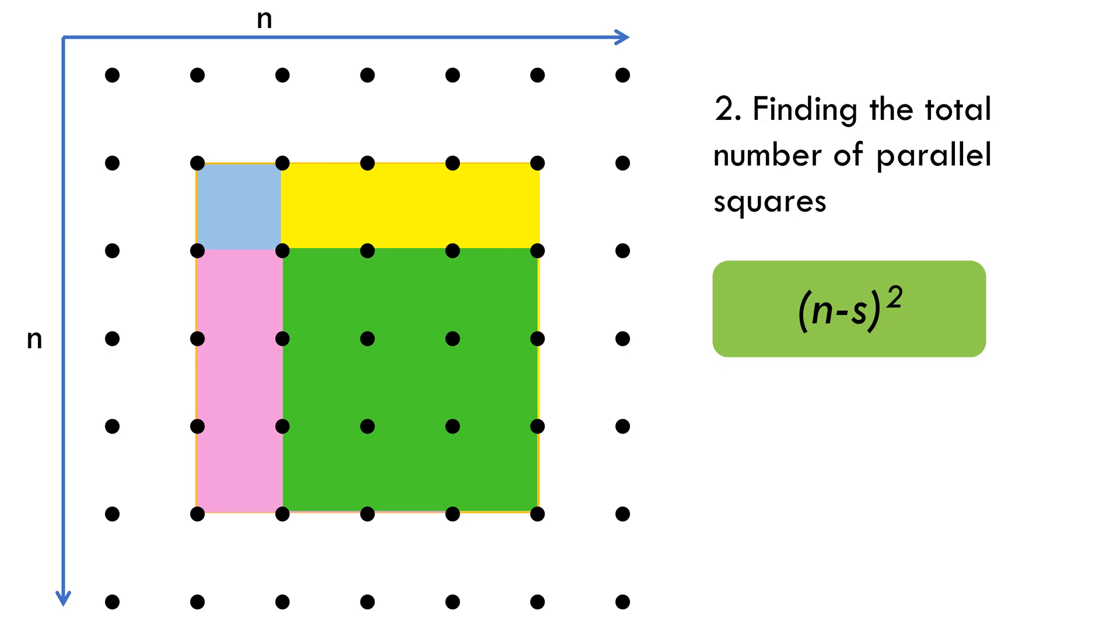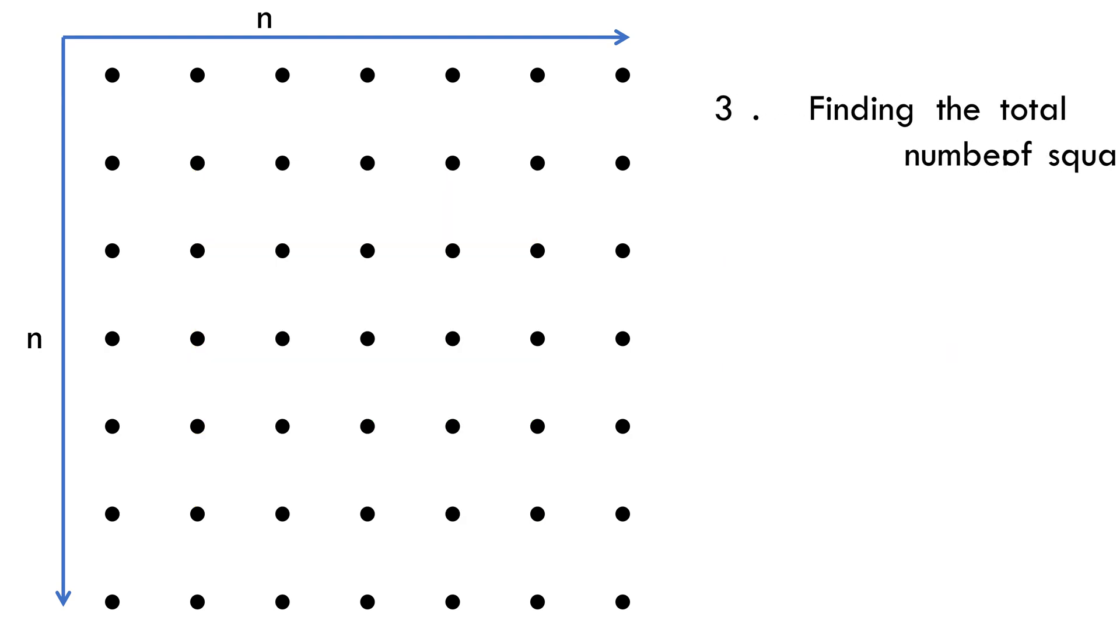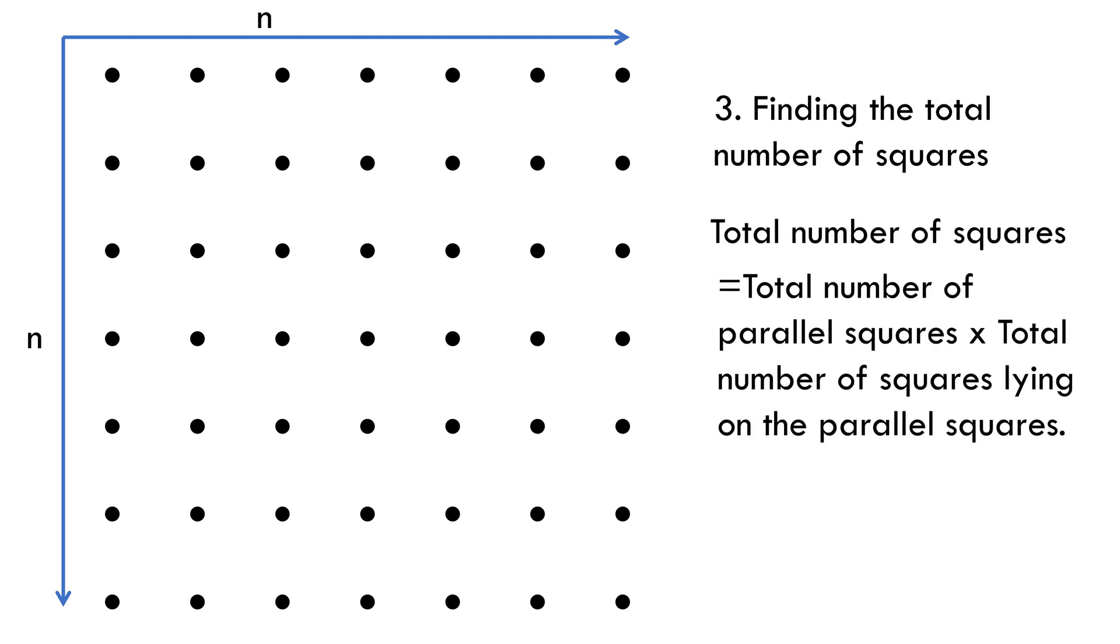Now, for the third step, we'll find out the total number of all squares in n by n grid. So, the total number of squares in the figure can be obtained by multiplying the total number of parallel squares and the number of all squares lying on them. Please note that we can do this because one square can't lie on two different parallel squares.